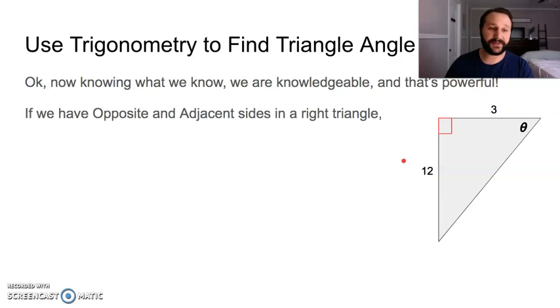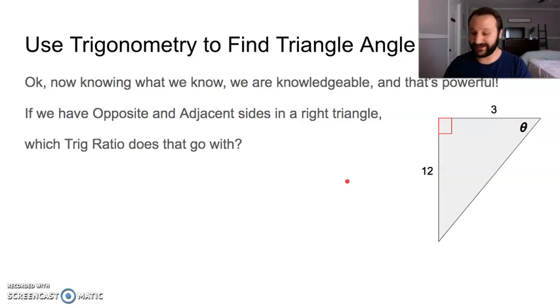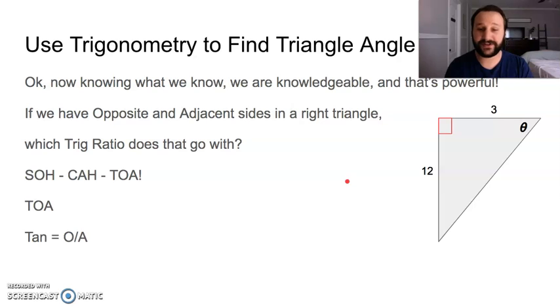We have opposite and adjacent sides in a right triangle. What ratio does this go with? I like to use SOHCAHTOA. We got TOA - tangent opposite over adjacent. Tangent is opposite over adjacent. Sine is opposite over hypotenuse. Cosine is adjacent over hypotenuse. Go over and over in your mind SOHCAHTOA, however you can remember it. Make sure you remember it.